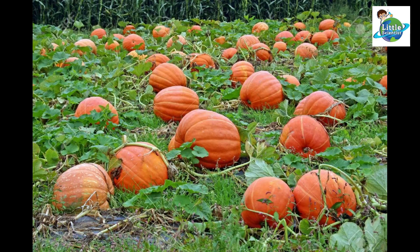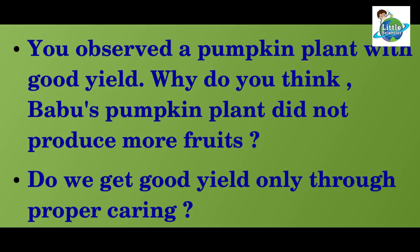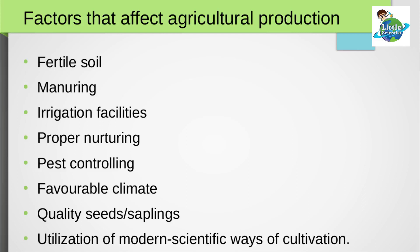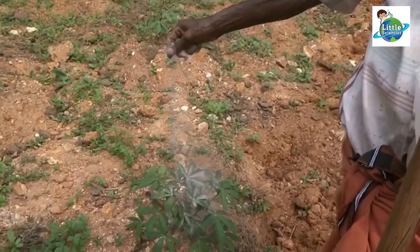You observed a pumpkin plant with good yield. Babu's pumpkin plant did not produce more fruits. Do we get good yield only through proper caring? What are the things to be considered to get good yield? Now note down the factors that affect agricultural production. What are these factors? Factors that affect agricultural production are: fertile soil, manuring, irrigation facilities, proper nutrient,